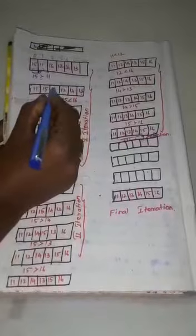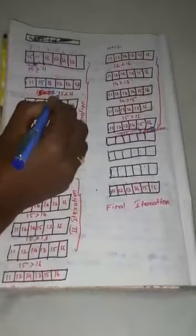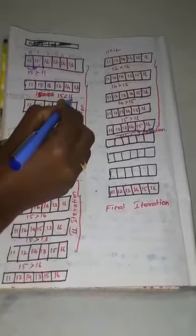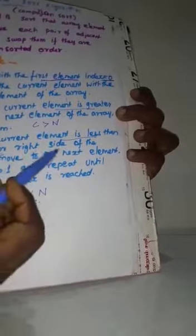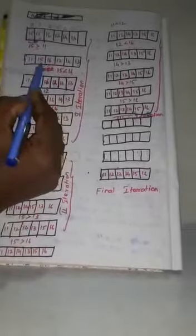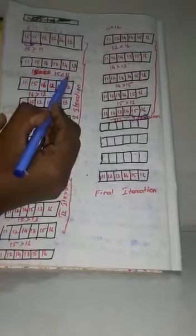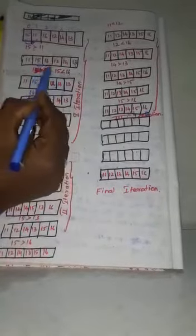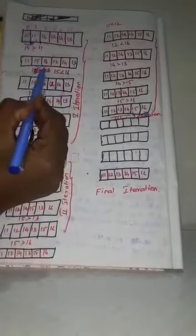After the swap, the array is: 11, 15, 16, 12, 14, 13. Next, compare the current element 15 with the next element 16. 15 is less than 16, so according to the pseudo code — if the current element is less than the next element, don't swap these values.